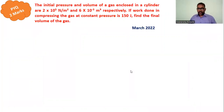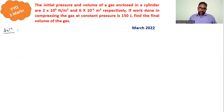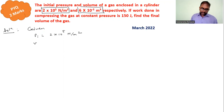Now let's see the next question which was asked in the board examination for 2 marks — it's a problem from chapter 4. The given initial pressure and volume of gas enclosed in a cylinder are: initial pressure Pi = 2×10⁵ Newton per meter square, and initial volume Vi = 6×10⁻³ meter cube.